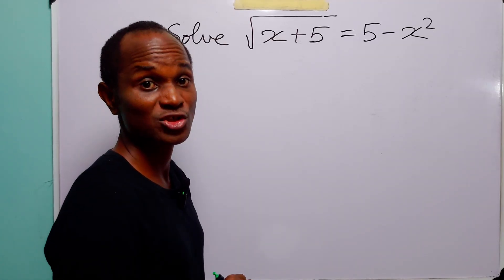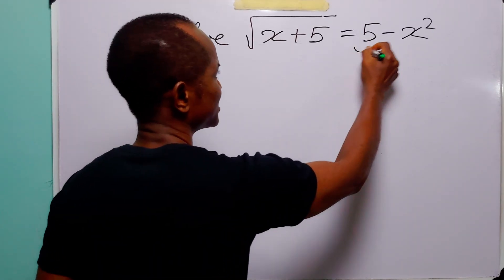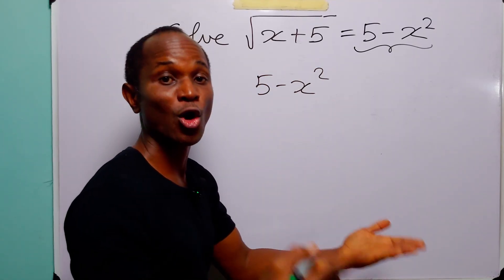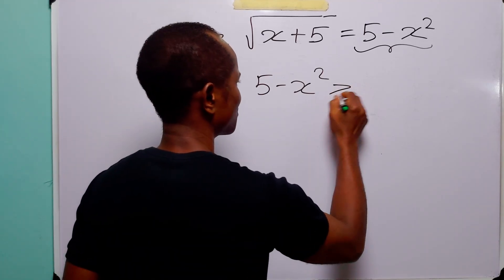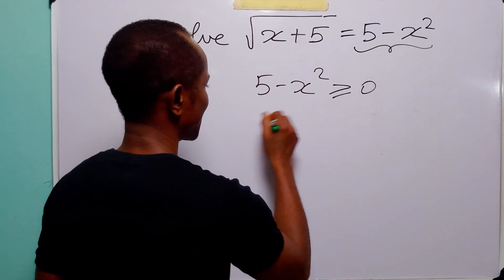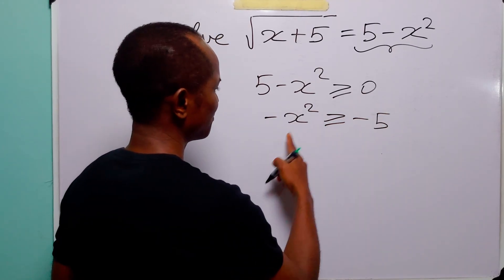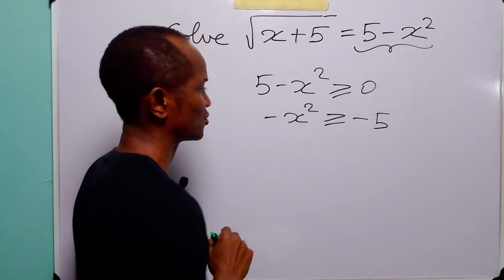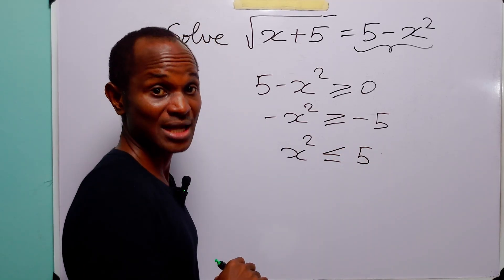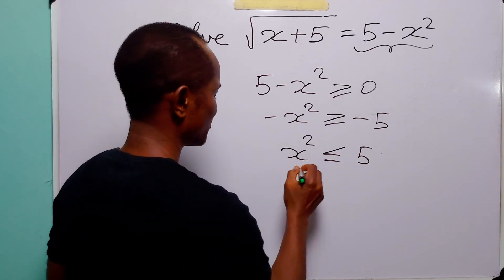First, look at the equation. For real roots, this square root must be positive, so the quantity 5 minus x² is only allowed to be greater than or equal to 0. When we subtract 5 from both sides, we get minus x² ≥ -5. Multiplying both sides by -1 (and flipping the inequality sign), we get x² ≤ 5.